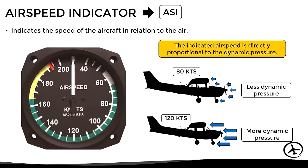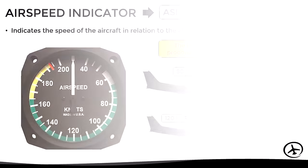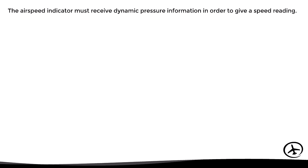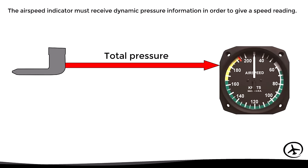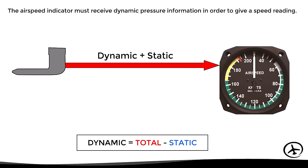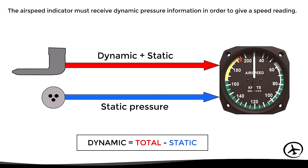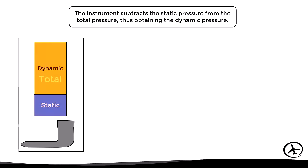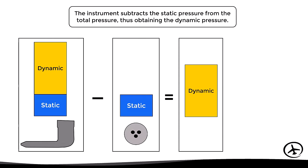If the aircraft experiences high dynamic pressure, this will be interpreted as high speed, and vice versa. The airspeed indicator needs dynamic pressure information, but the pitot tube provides total pressure, not only dynamic pressure. Since total pressure equals dynamic pressure plus static pressure, if we want only the dynamic pressure we take the total pressure and subtract the static pressure provided by the static port. So the instrument subtracts static pressure from total pressure, obtaining dynamic pressure, with which it can give an airspeed reading.